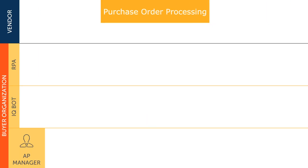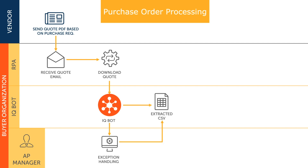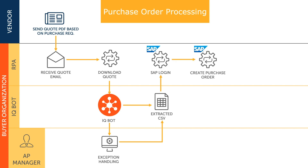Let's take a closer look at how this is done. With RPA, new quote documents are immediately downloaded from incoming emails. These new quotes are then uploaded to IQBot for processing. IQBot extracts the data on the quote into structured CSV format. RPA can then log into the ERP system — in this case, SAP — and use the formatted data to enter all of the required information for the purchase order without human intervention.